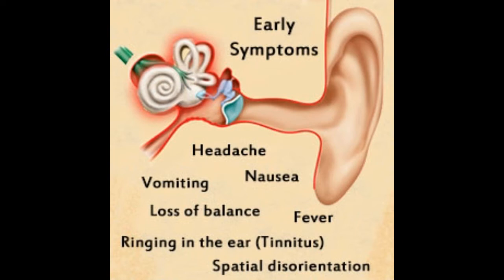The two most common infections of the inner ear are labyrinthitis and vestibular neuritis. How to determine if you have an inner ear infection? The early symptoms of inner ear infection can vary from mild to severe. In the initial stages of the infection, the following symptoms are commonly observed.